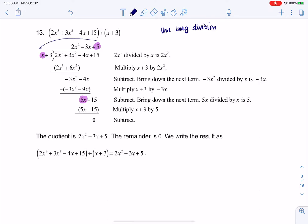And the same thing happens. I'm going to multiply 5 to both terms in my binomial. I get 5x plus 15 when I subtract it. Actually, everything goes away, so we have a remainder of 0.